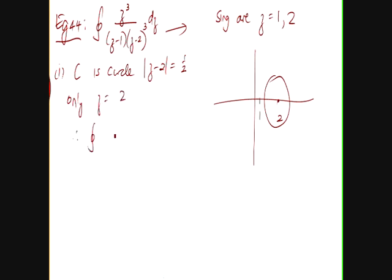Therefore, the integral will be given by 2 pi i. Now, since z minus 2 has got a cube there, it will be 2 factorial.